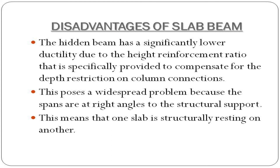Disadvantages of slab beam: The hidden beam has a significantly lower ductility due to the high reinforcement ratio that is specifically provided to compensate for the depth restriction. On column connections, this poses a widespread problem because the spans are at right angles to the structural support. This means that one slab is structurally resting on another.